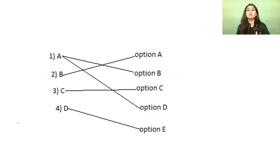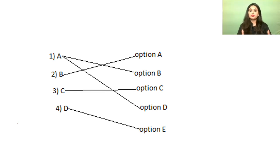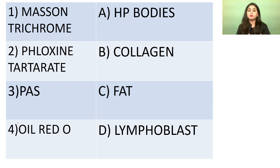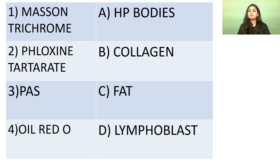The match the following pattern is relatively simpler. The examiner gives you factual things — things you've mugged up or crammed before the exam — and you just need to match the correct options. Let's start with stains and what they help stain.